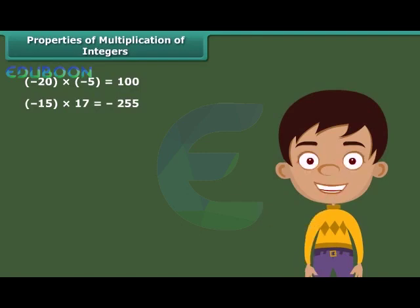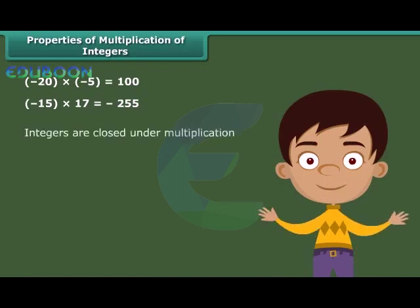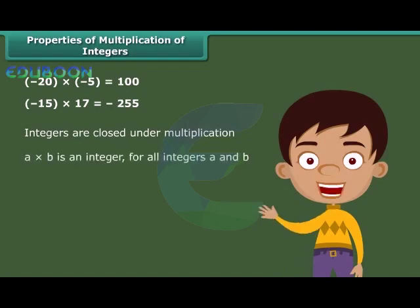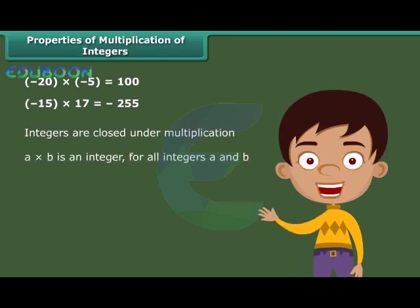Integers are closed under multiplication. In general, a into b is an integer for all integers a and b.